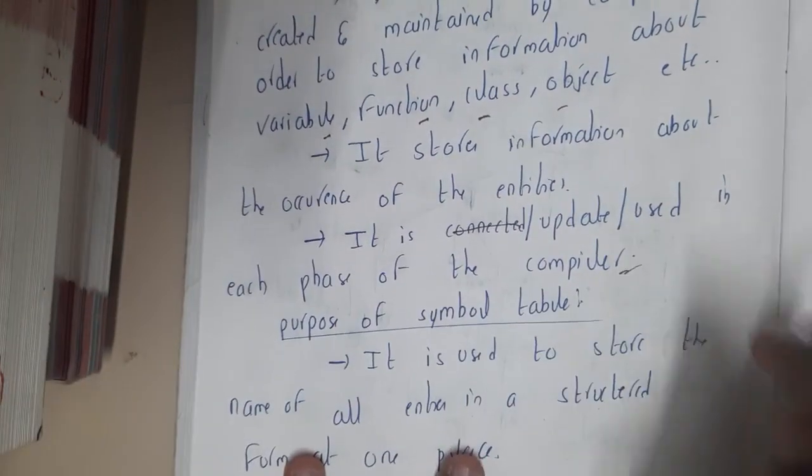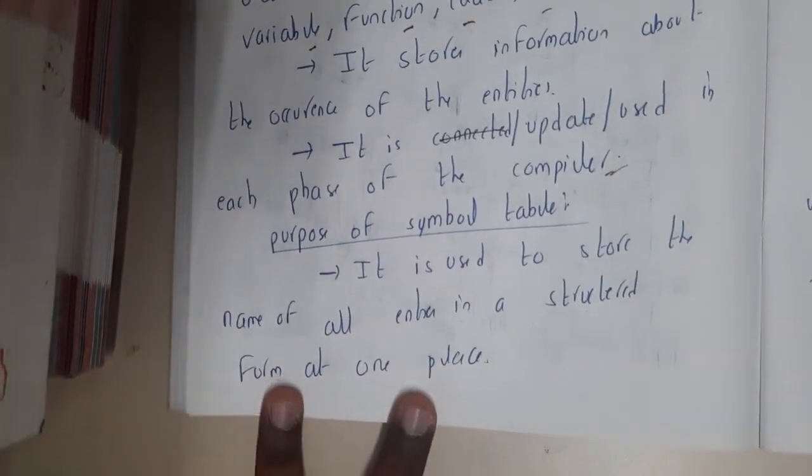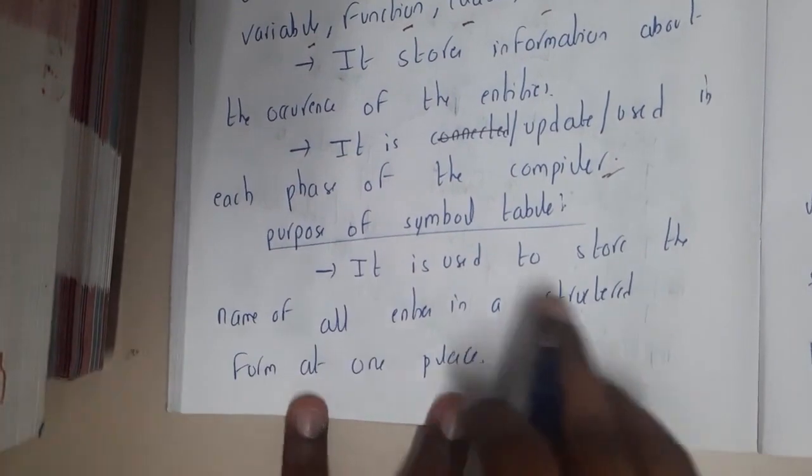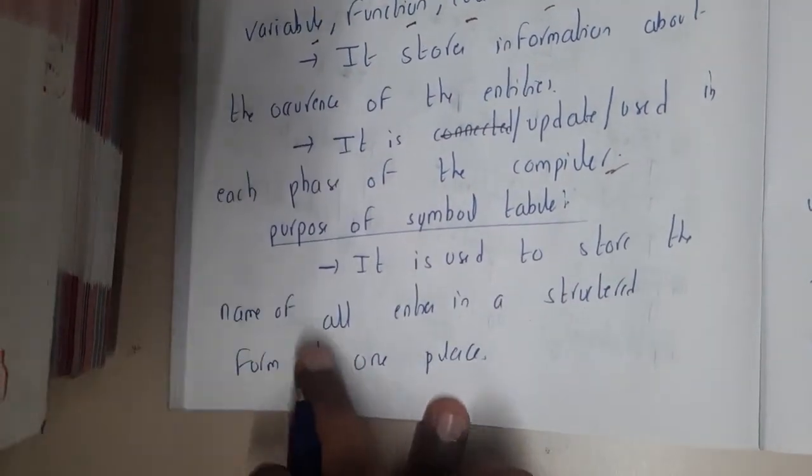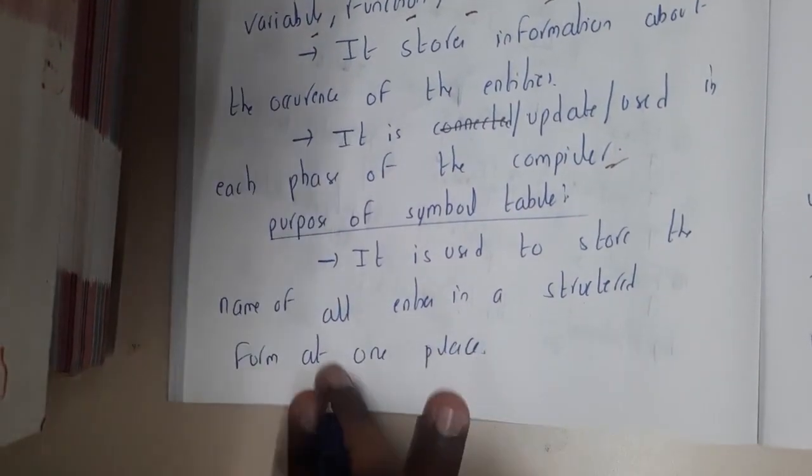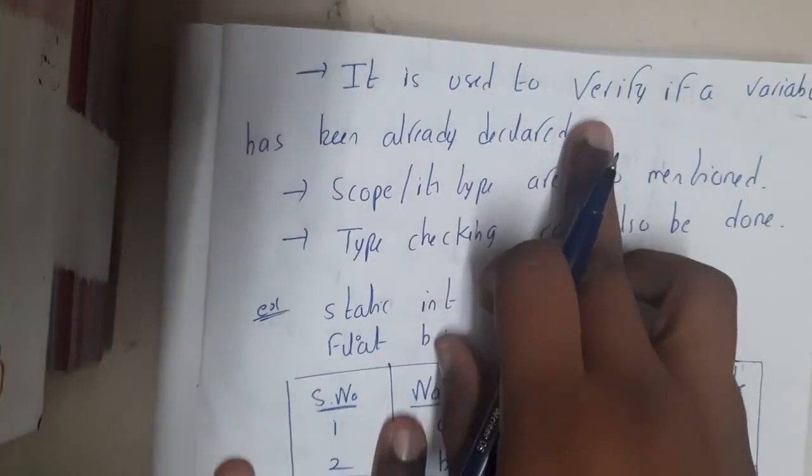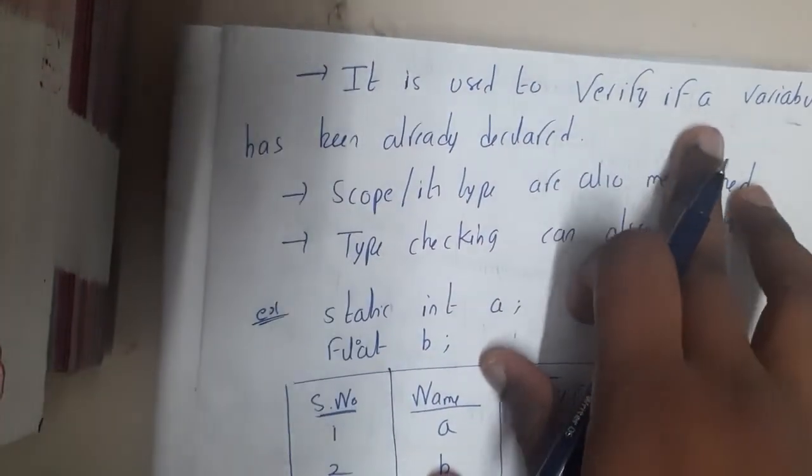The purpose of symbol table: it is used to store the name of all entities in a structured format at one place. It will be a single table in which multiple things will be stored. It is used to verify if a variable has been already declared or not.